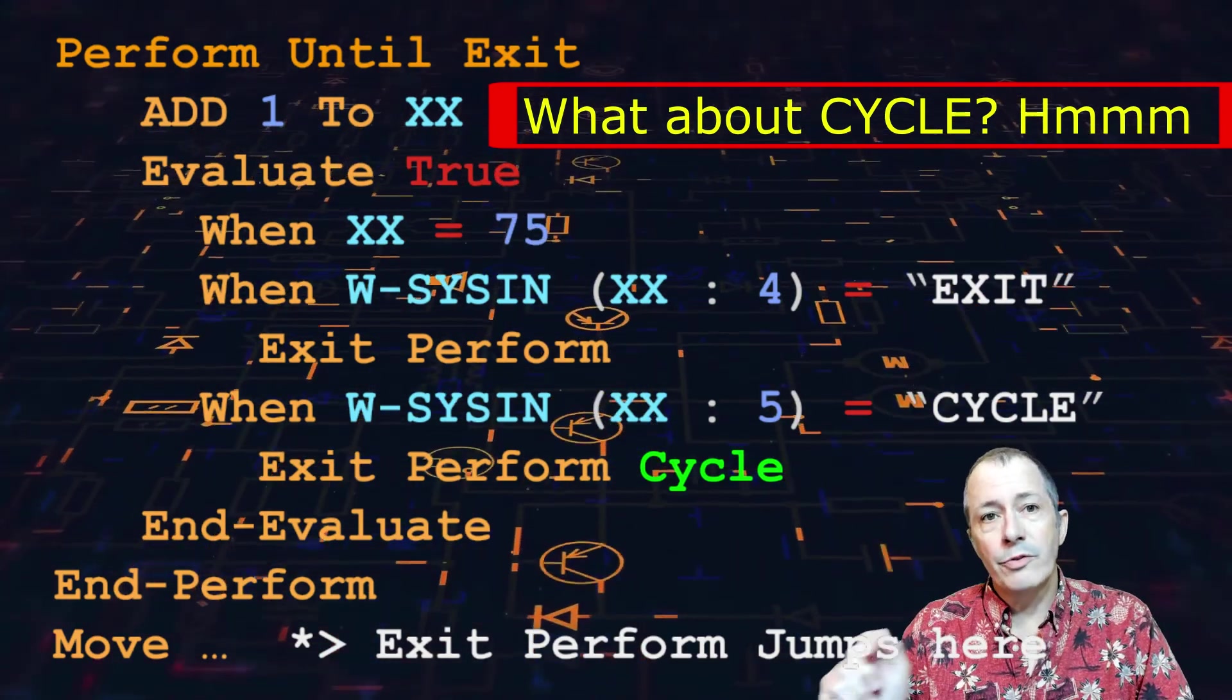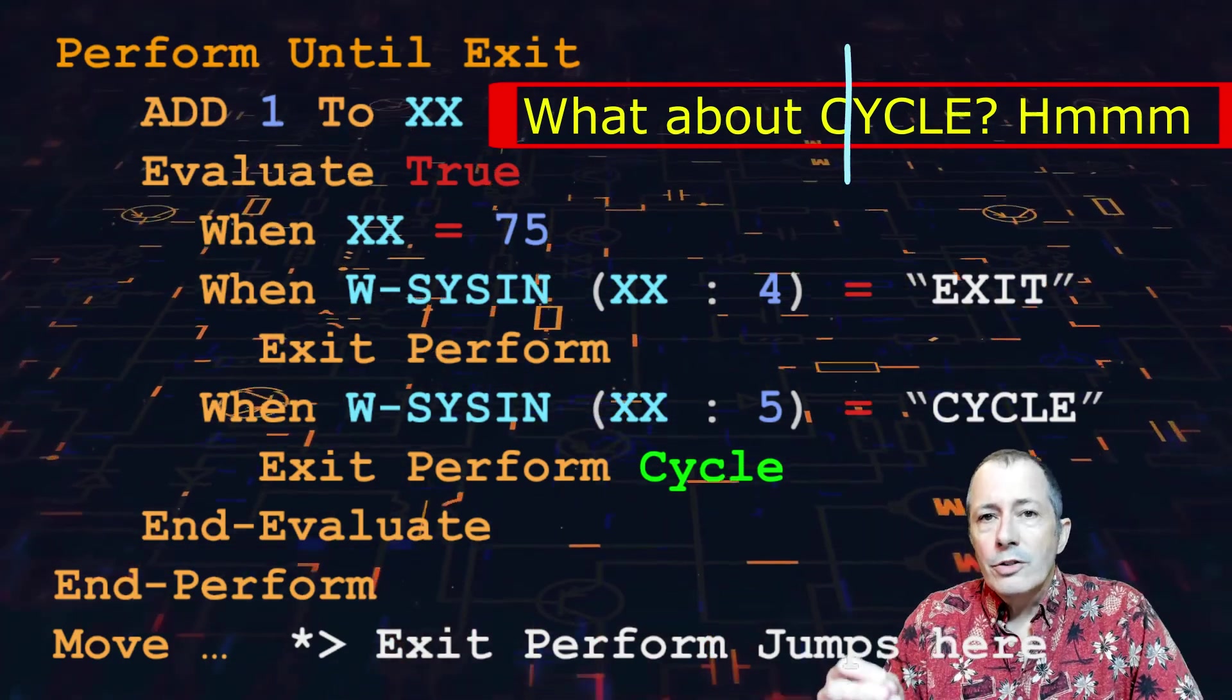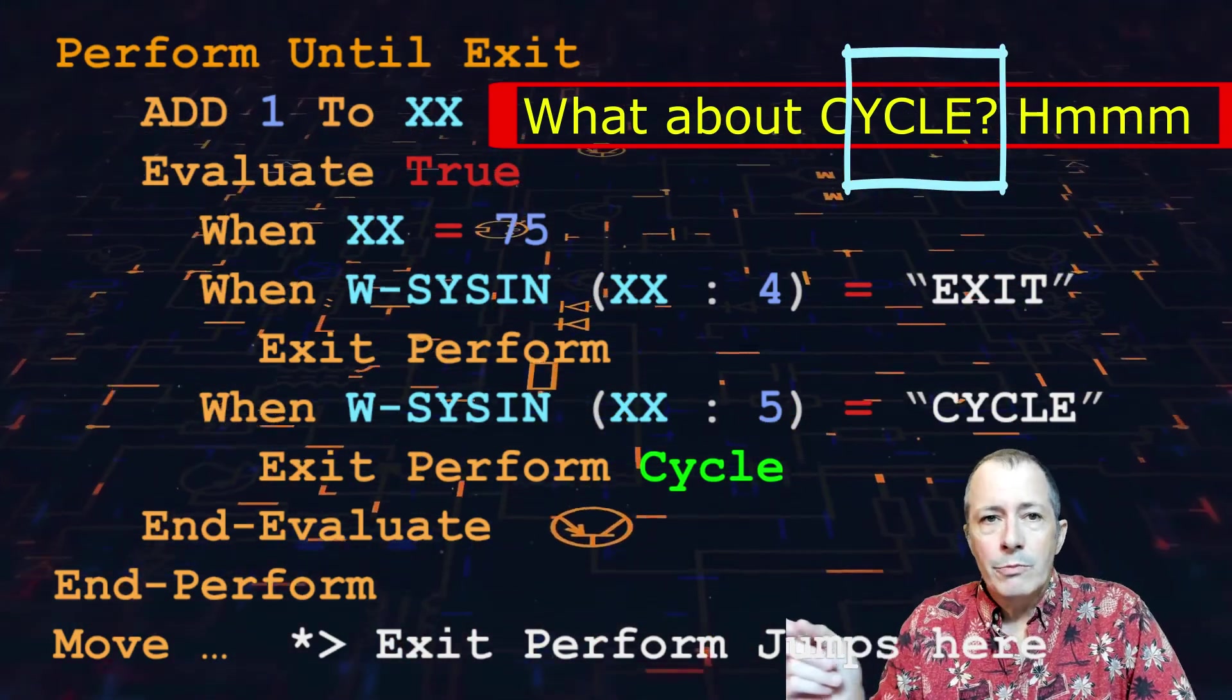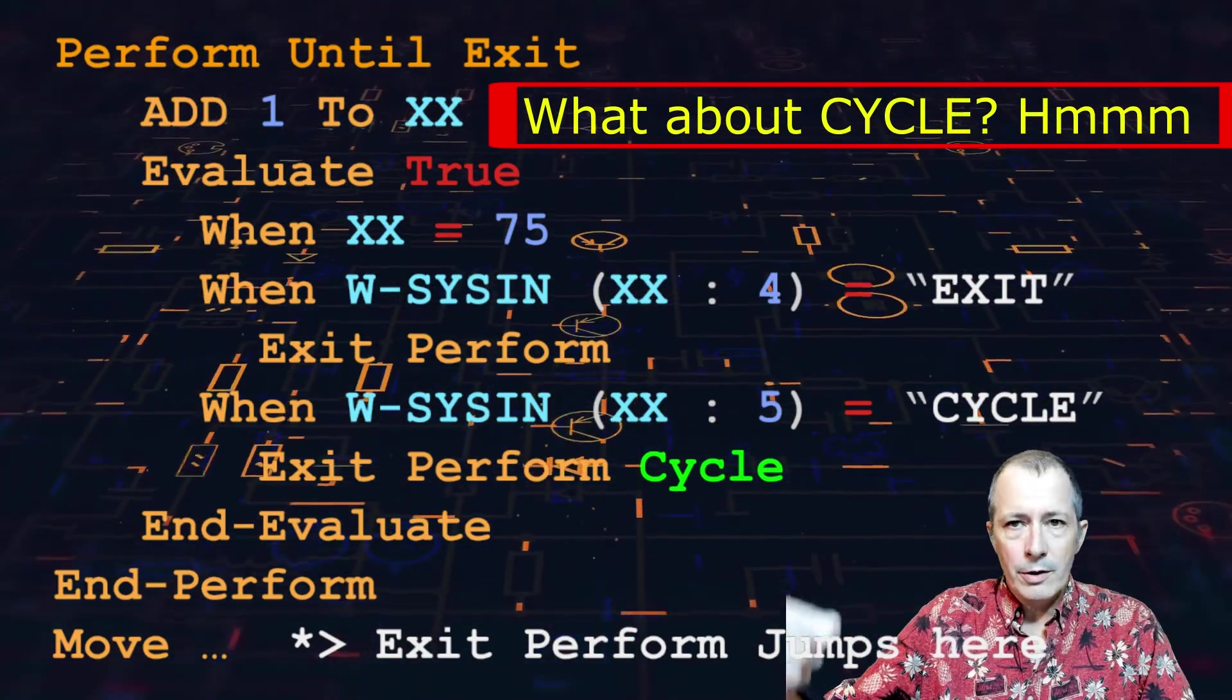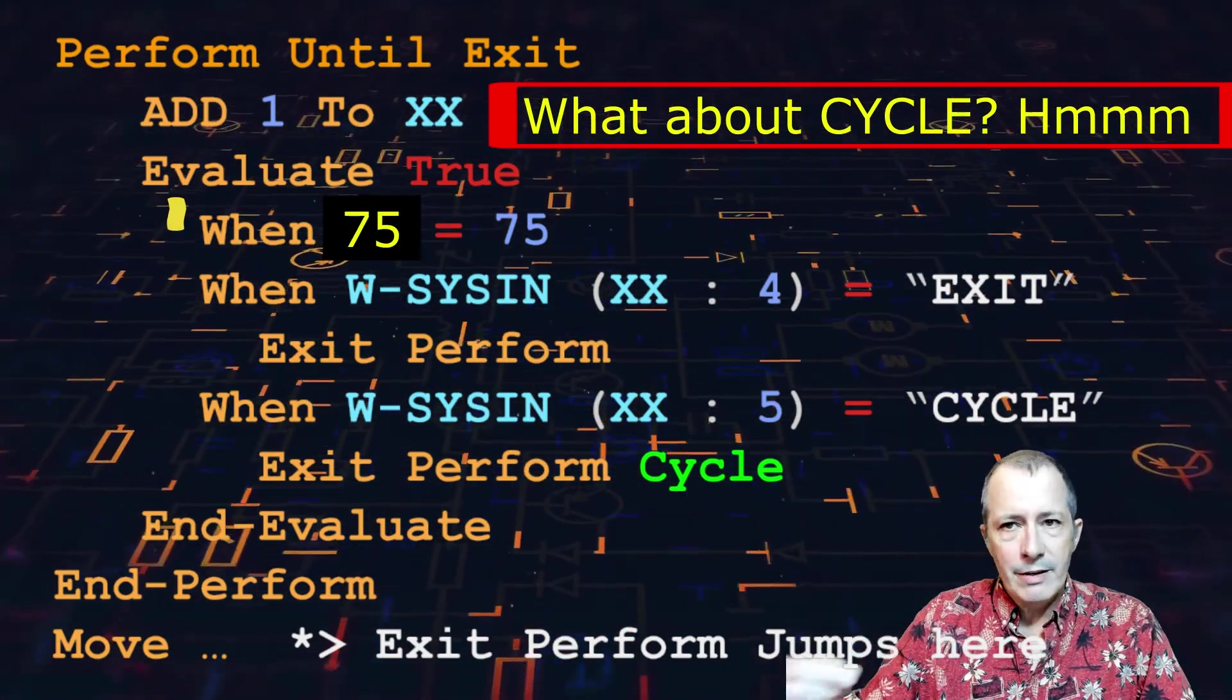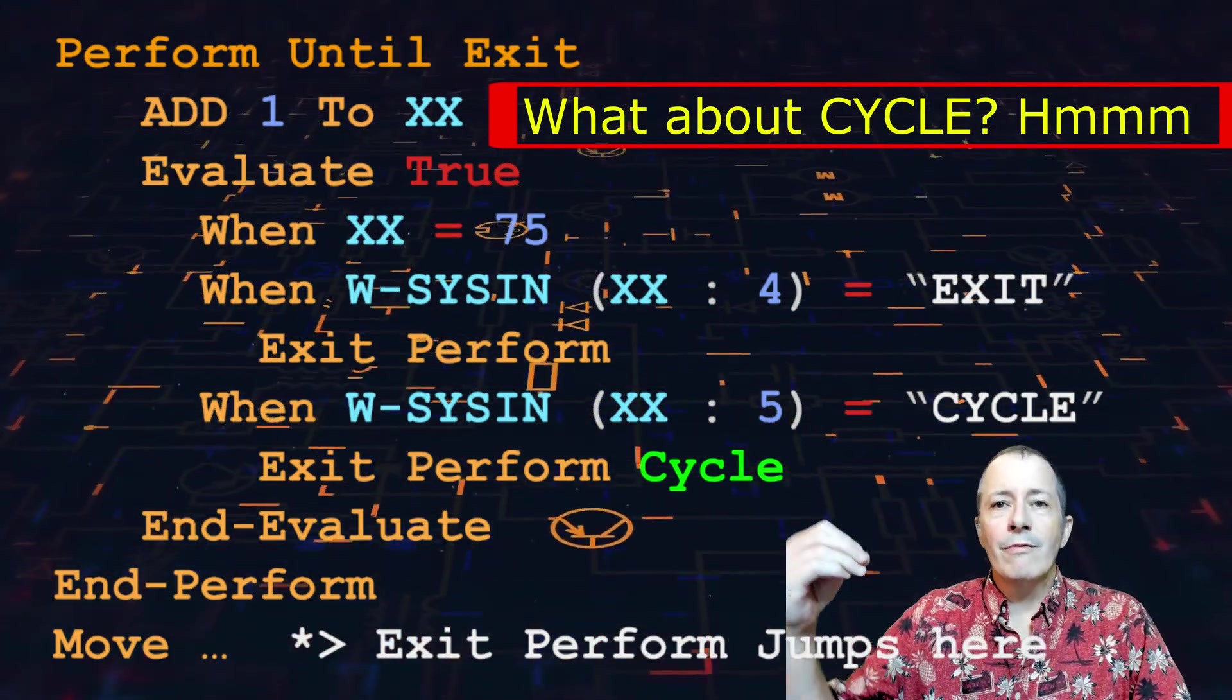So xx becomes 13. Now the third when looks at the y through the question mark on the record. And the loop continues doing a loop until xx becomes 75, at which point exit perform is invoked.